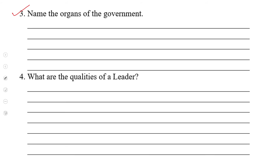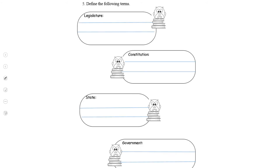Question three asks you to name the organs of the government. Question four asks about the qualities of a leader — write them down in the given space. The final question asks you to define the following terms: legislature, constitution, state, and government. Pause the video and quickly complete your assessment sheet.